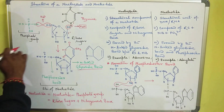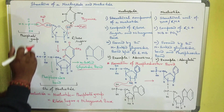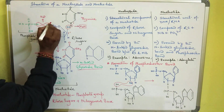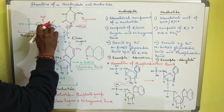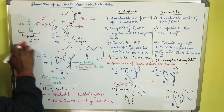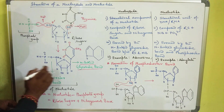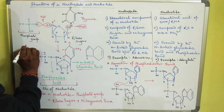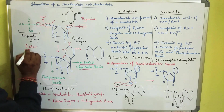The second bond formed to produce a nucleotide is a phosphoester bond, which is formed between the fifth position — that is the 5 prime carbon of the ribose sugar — and the hydroxyl group of the phosphoric acid. Here also one molecule of water is removed, and the bond formed is called the phosphoester bond.